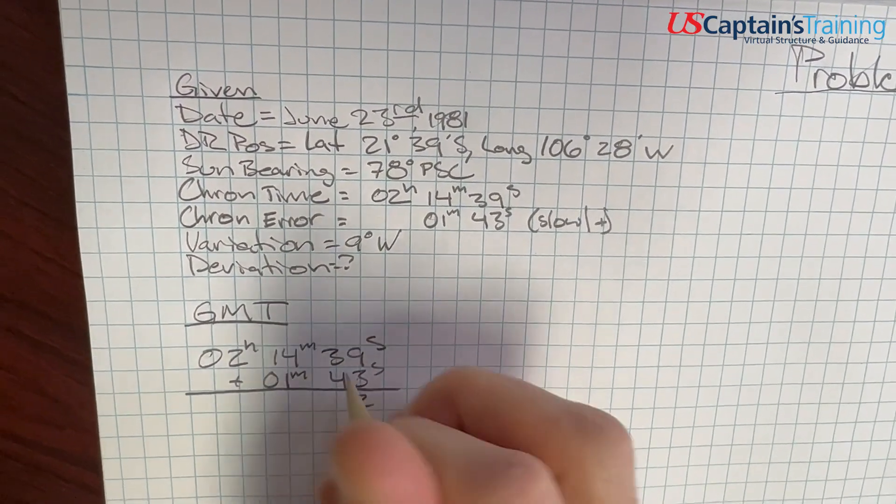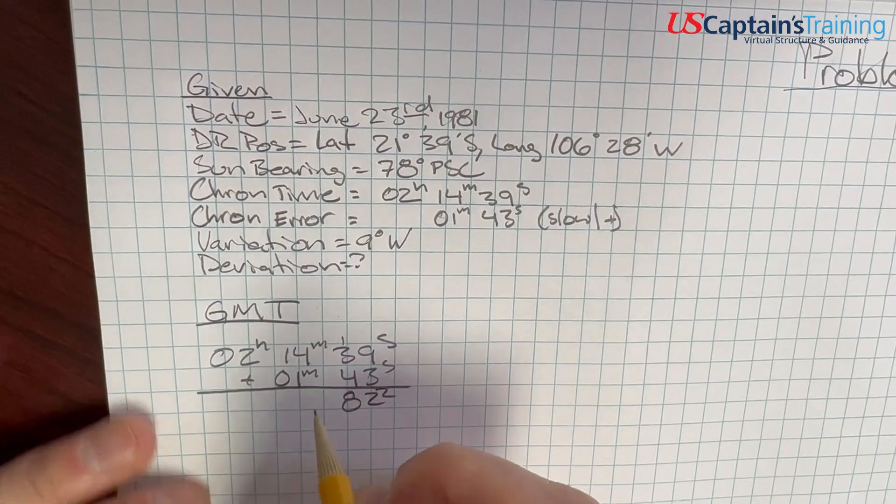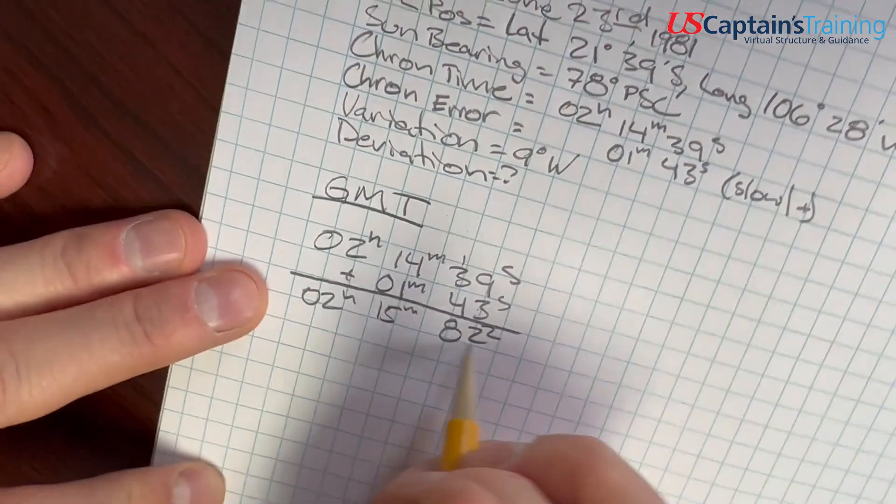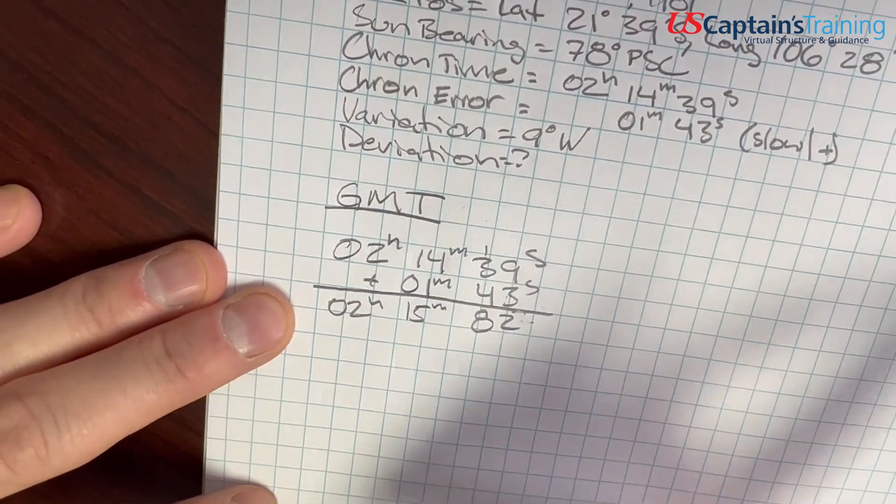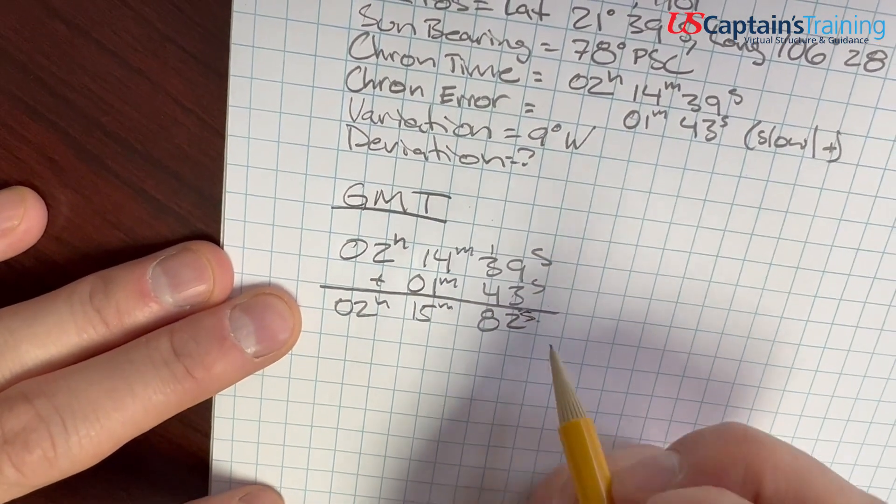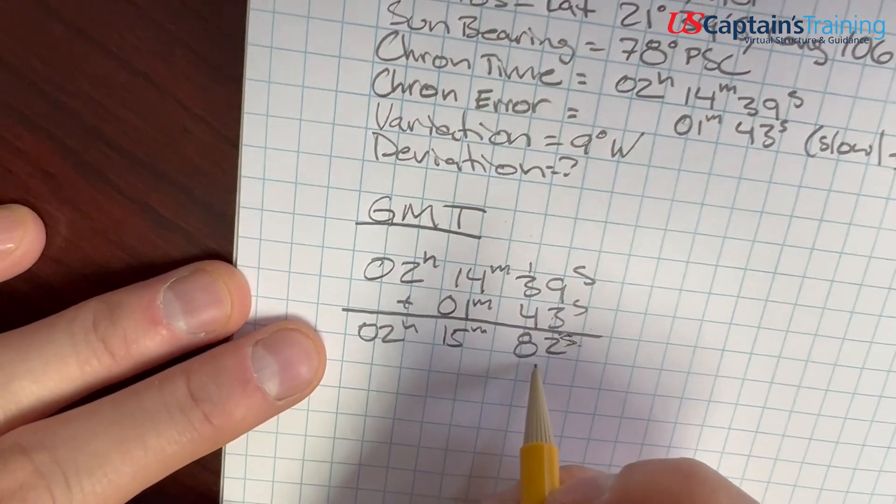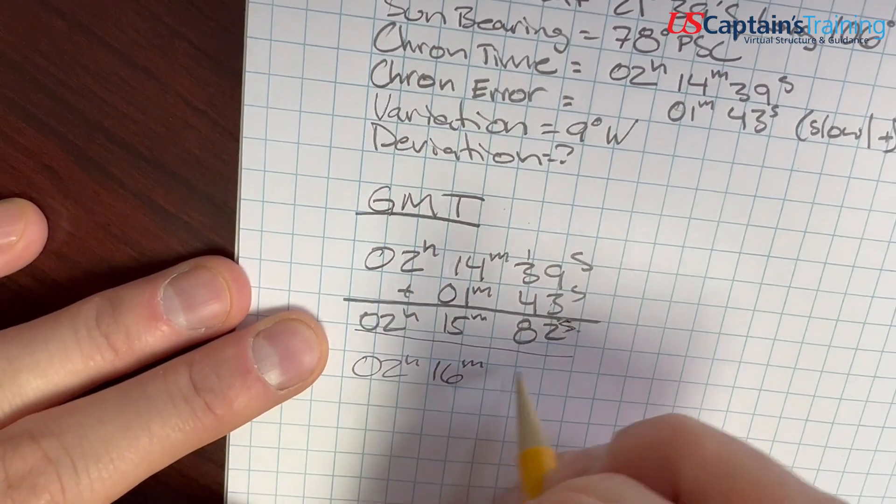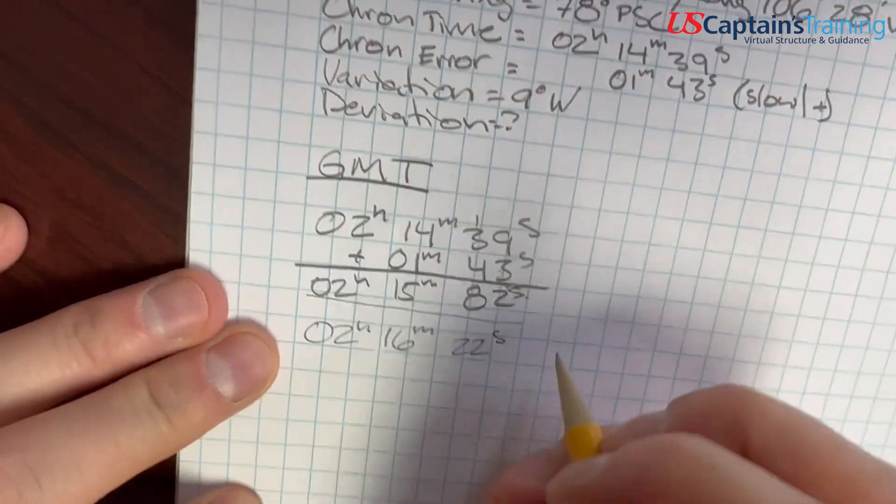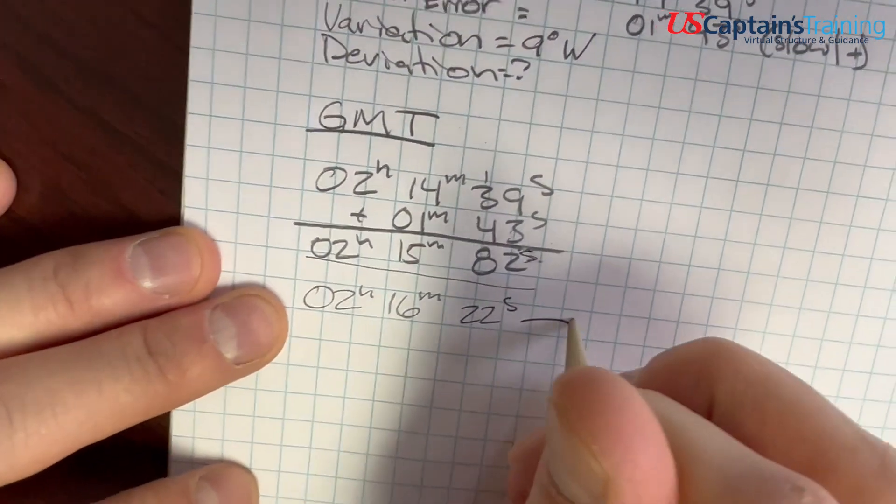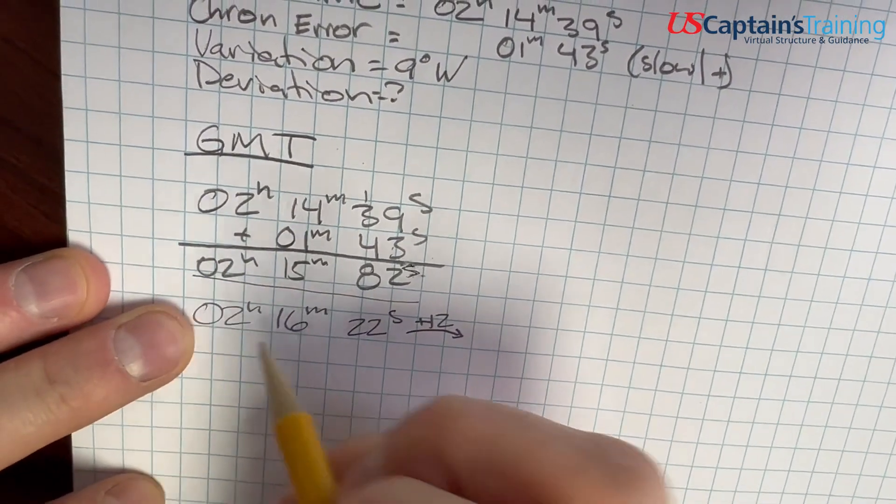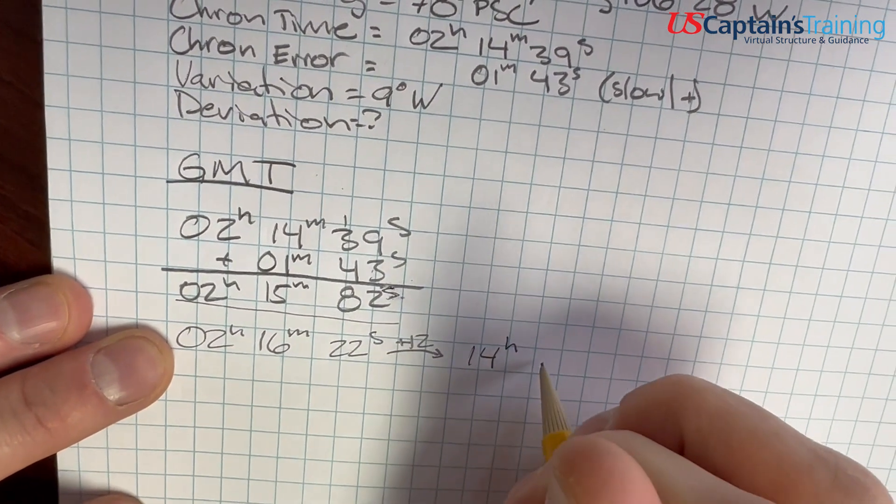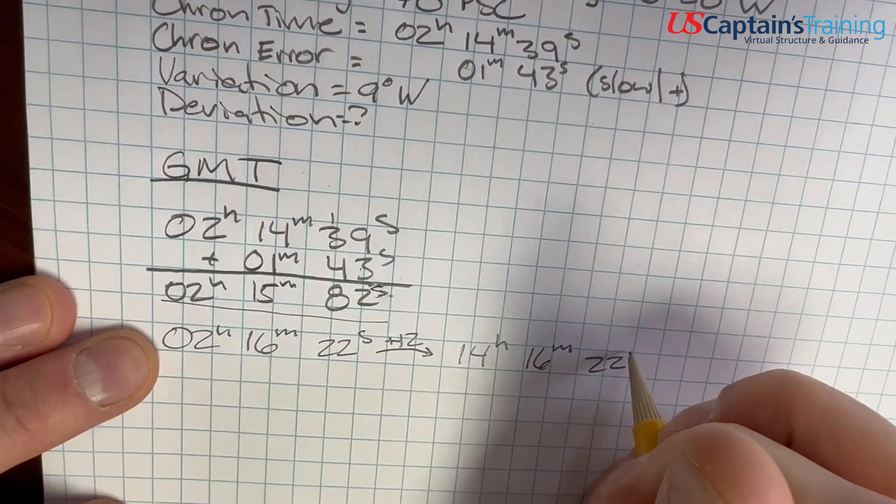1 minute 43 seconds. We're slow, so we're adding it to catch back up. 9 and 3 is 12, carry the 1. We get 02 hours, 15 minutes, 82 seconds. We need to convert that 82 seconds: minus 60 and add a minute over here. So we're going to be 02 hours, 16 minutes, 22 seconds. Or the other option, there's ambiguity in this, is going to be 12 hours in the future. If you add 12 hours here, you're going to be 14 hours, 16 minutes, 22 seconds.